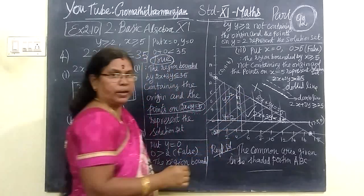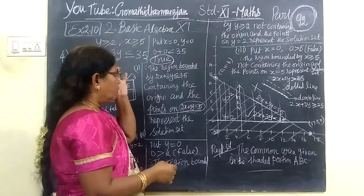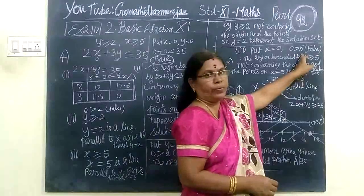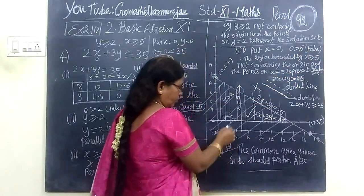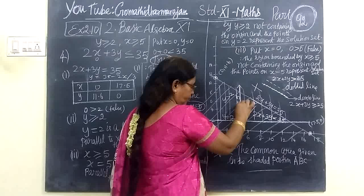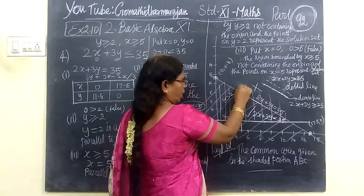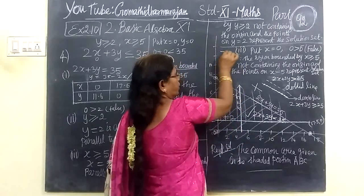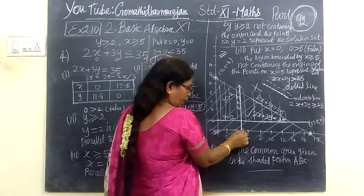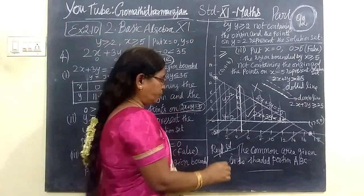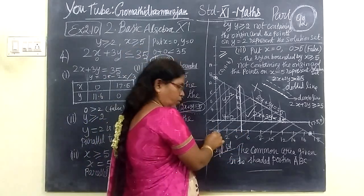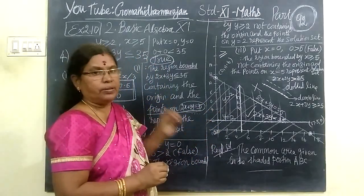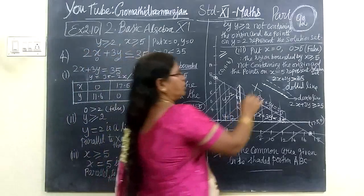Then put x equal to 0. 0 greater than 5 — this also falls false. Then x equal to 5 is a line equal to 5. This line is x equal to 5. The point (0, 0) is not contained, so we are considering the region not containing (0, 0) since it is false.